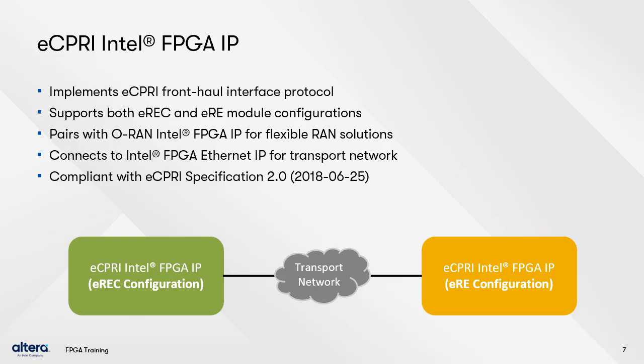Together, the eREC and ERE comprise a single eC-PRE node, so a system requires at least one of each. This is pictured in the block diagram at the bottom of this slide. The eC-PRE IP is compliant with version 2.0 of the eC-PRE specification. It supports all three information flow types: User Plane, Synchronization Plane, and C&M, or Control and Maintenance Plane. To create a more complete RAN solution, the eC-PRE IP can be paired with the O-RAN IP from Altera or another vendor.